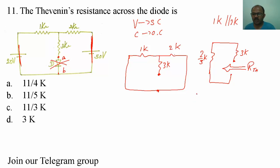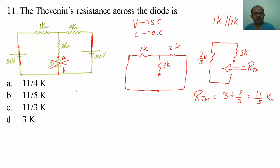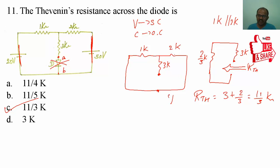What is the value of Rth? Rth equals 3 plus 2/3, which equals 11/3 kilo ohms. Hence, the suitable option is option number C. Note that Norton's impedance and Thevenin's impedance both mean the same thing.